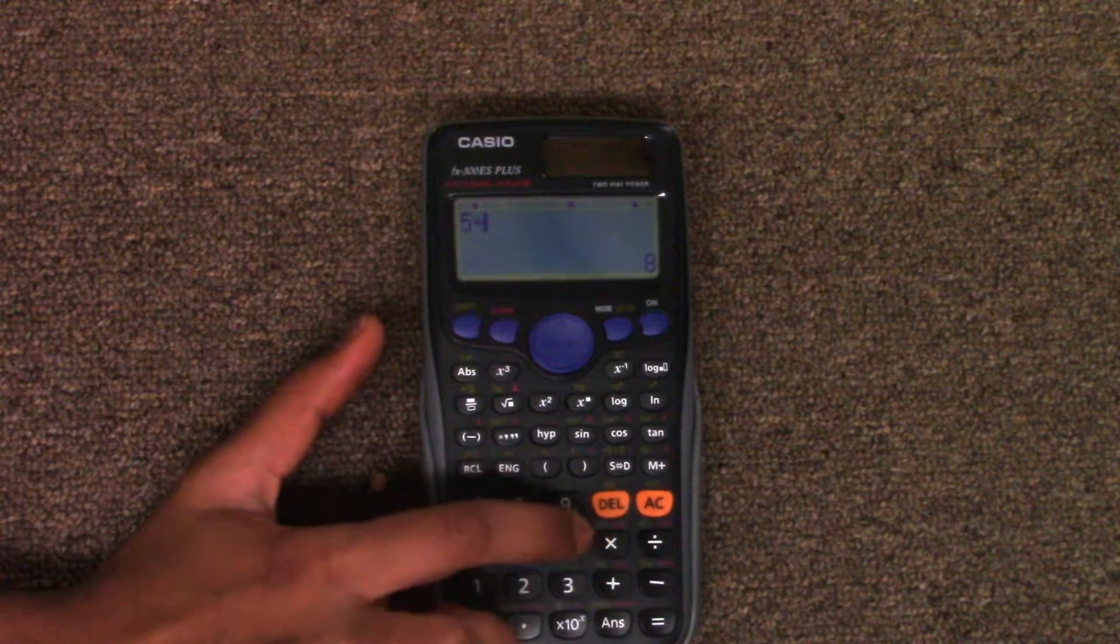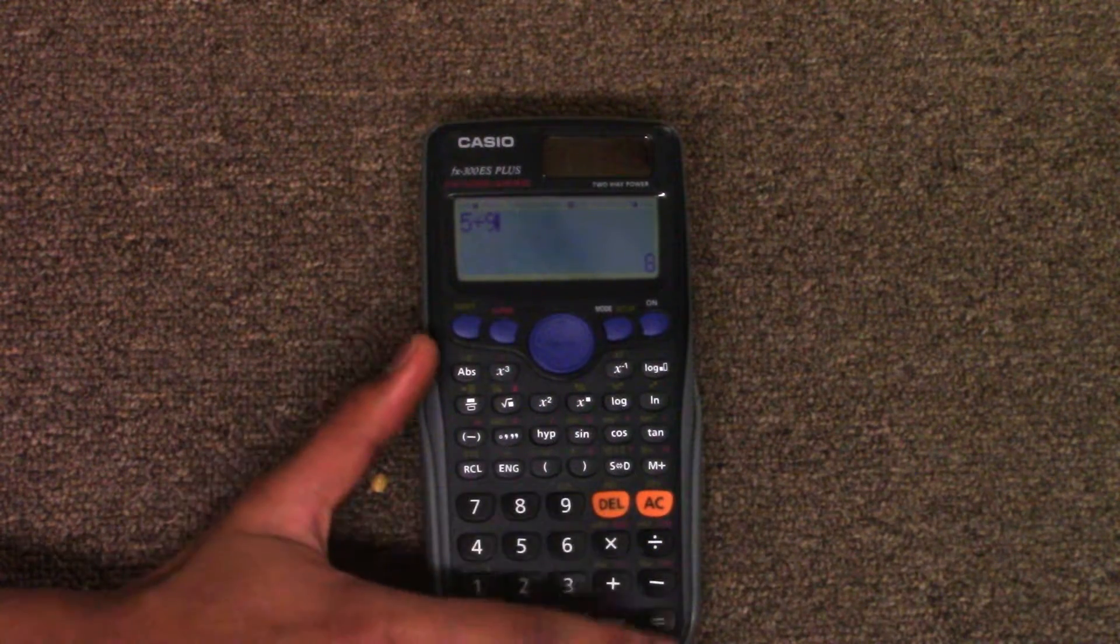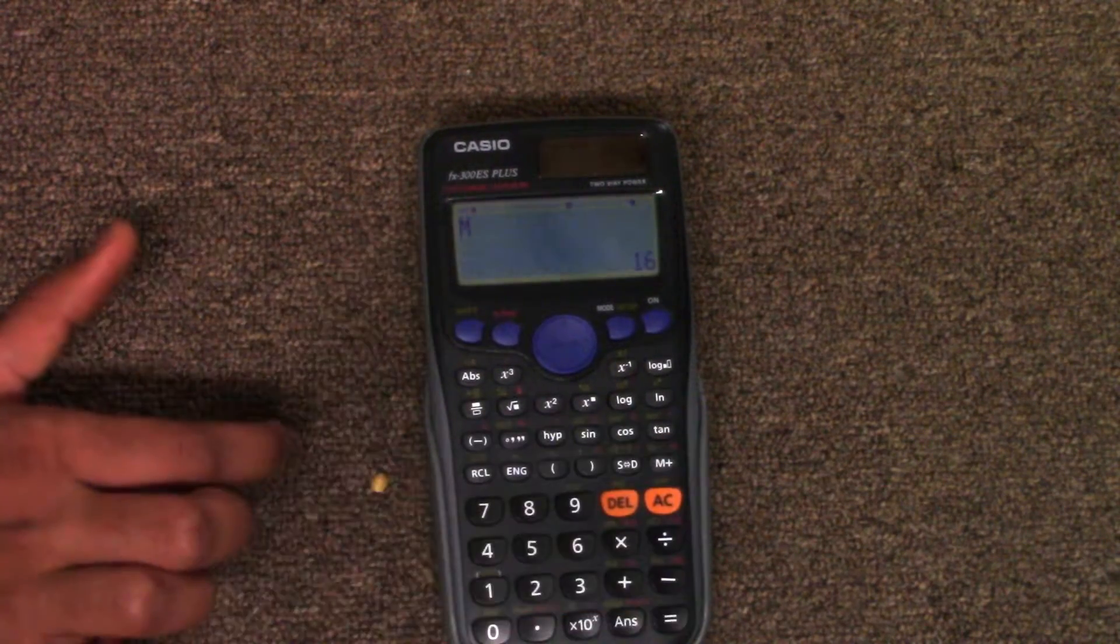As you can see here, this calculator has a setting where it only shows decimal numbers and also there is something in the memory.